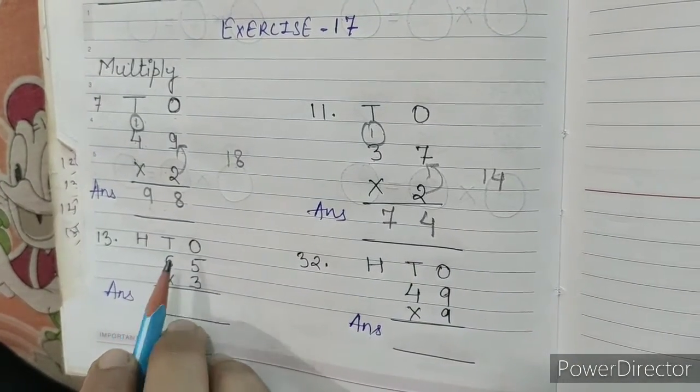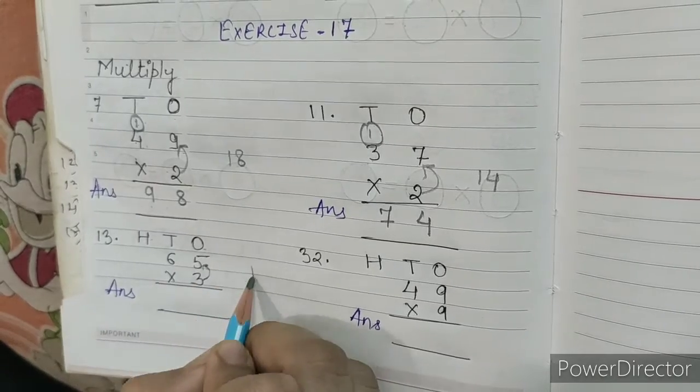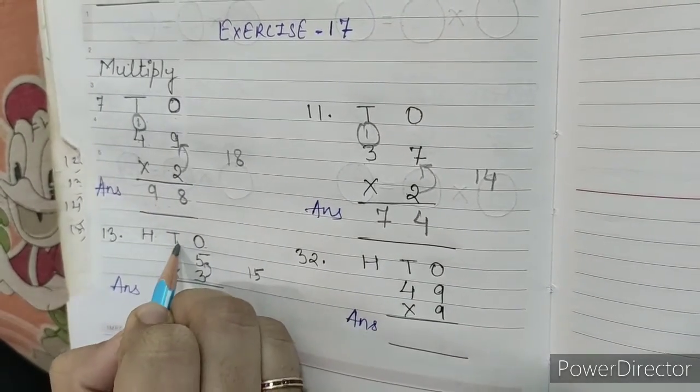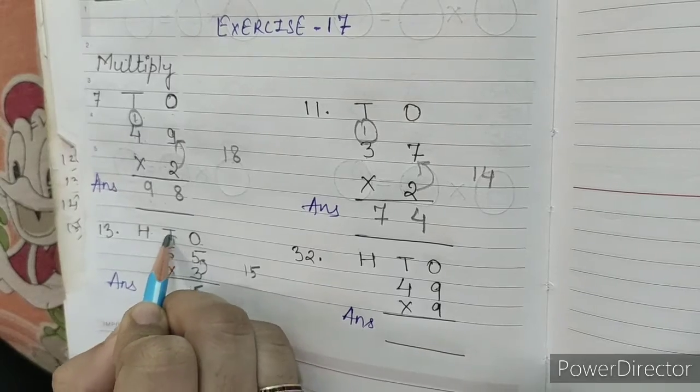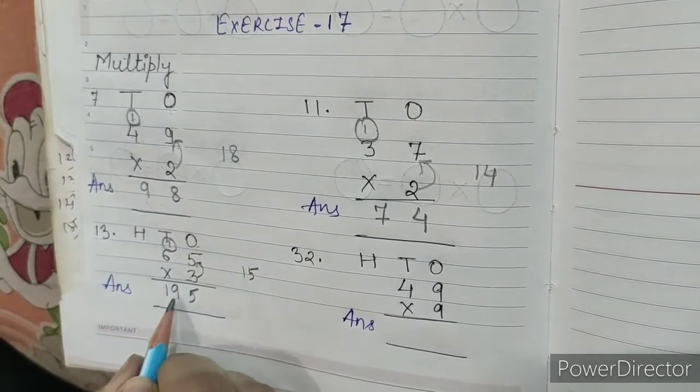Question number 13, ones, tens, hundreds. 5, 3s are 15. 1, 5, 15. We will write 5. Carry over 1. 6, 3s are 18. 18 plus 1, 19. Our answer is 195.